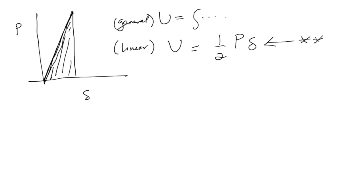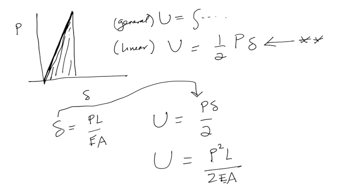Now if Delta is equal to PL over EA, and U is equal to P Delta over 2, then we can plug this Delta expression in for Delta. We can take this Delta, plug it into the expression for strain energy, and then we get P squared L over 2EA. So you can see there's a squared term here, so the strain energy is essentially related to the square of the load P. So this is no longer a linear relationship. There's not a linear relationship between U and P because of this squared term here.